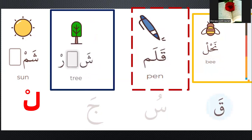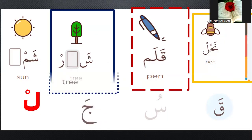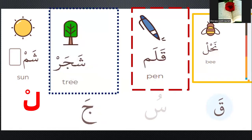Number three: what can you see? It's a tree — tree means shajar. Which letter is in the middle? Shajar. Yes, it's shajar.